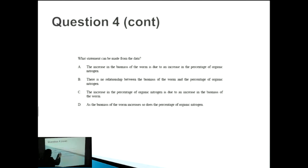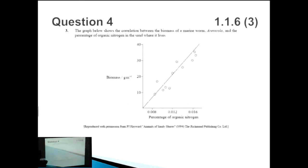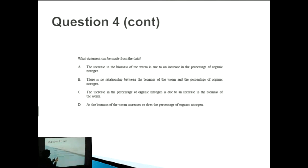So A, the increase in the biomass of the worm is due to an increase in the percentage of organic nitrogen. We don't really know that the increase in nitrogen causes the increase in biomass. It's a correlation, not a causation. And that's the same for the point number C as well. The increase in the percentage of organic nitrogen is due to an increase in the biomass of the worm. The bigger worms, they could be excreting more nitrogen. That's a total possibility, but we don't know for sure. So therefore, A and C are removed.